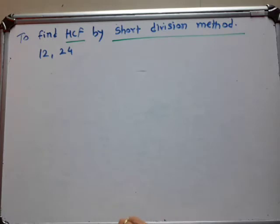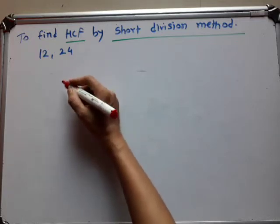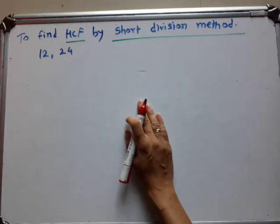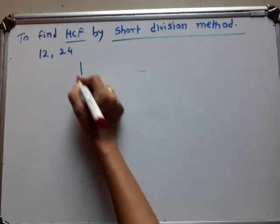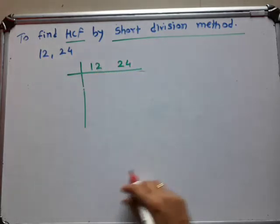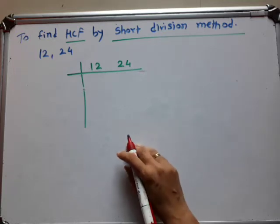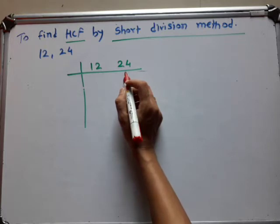Suppose you have two numbers. We take two numbers. We find the SCF of these two numbers by the short division method. In the short division method, you have to write the numbers this way: 12 and 24. Now, first you have to check — even number or odd number. Both are even numbers. 12 is an even number and 24 is again an even number. So both these numbers are divided by 2.